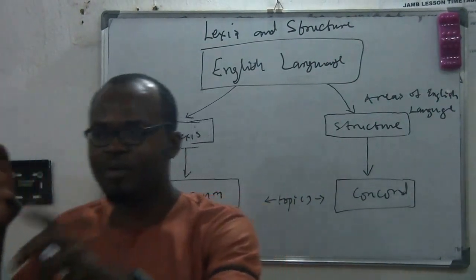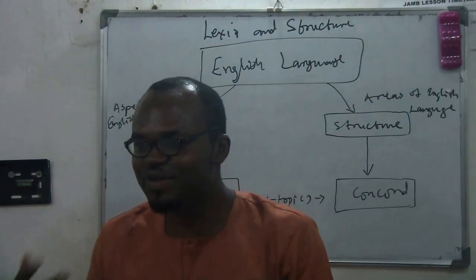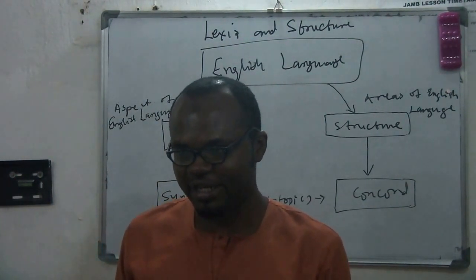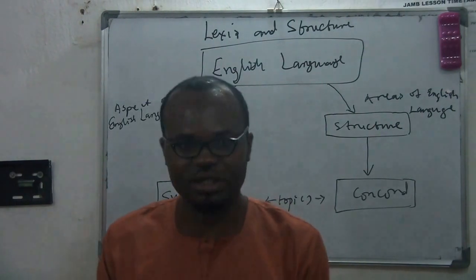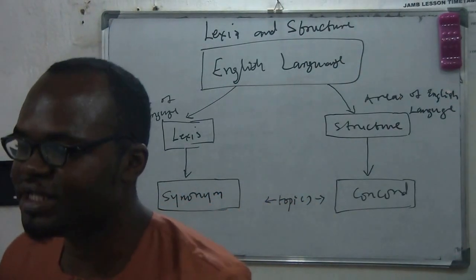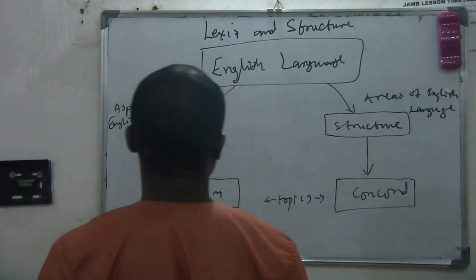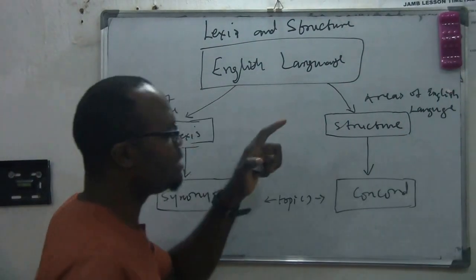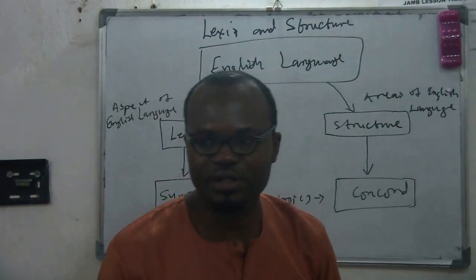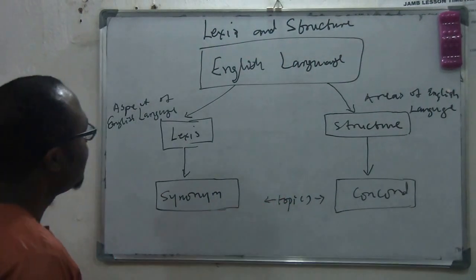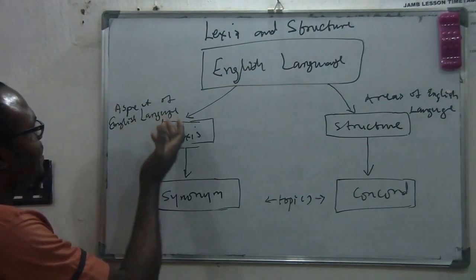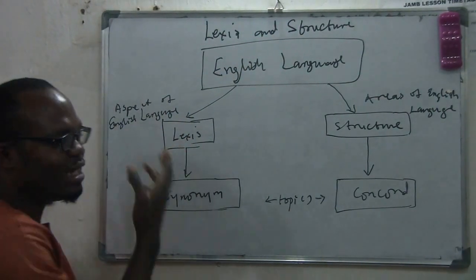But the way you combine those words — so that you say 'Obi beats Ada every day' — that combination is what is known as structure. In English language you always see problems from lexis and from structure.